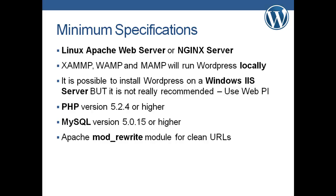So the minimum specifications: ideally you want a Linux Apache web server. WordPress will run on Windows IIS server but it's not recommended — a lot of people have had issues with it. Most of the big hosting companies like GoDaddy, HostGator, Bluehost, and JustHost are all Linux servers unless you specifically ask for a Windows server. You could also use an Nginx server, which supposedly runs fine.